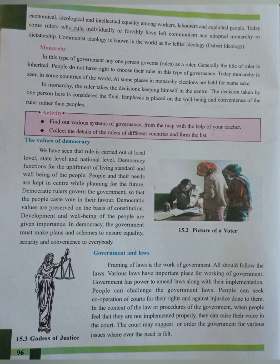The spirit of freedom, equality, and brotherhood are the values of democracy. A democratic government preserves the values of democracy by keeping the constitution in mind, implementing plans and schemes to ensure equality, security, and convenience for all. The values of democracy are preserved on the basis of the constitution, giving importance to the development and well-being of the people. According to former President Abraham Lincoln, the democratic government means the system which is run by the people, of the people, and for the people.